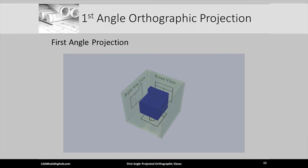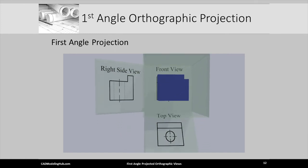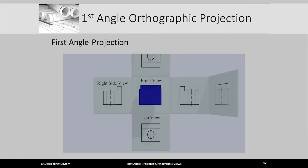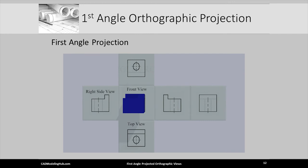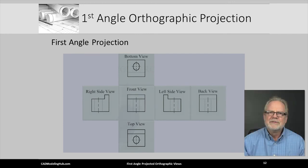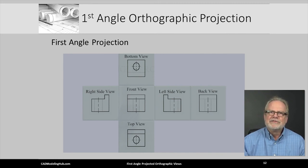It is fair to say that a doorstop this simple would never need all six orthographic views placed on a drawing. However, complex real-world models may need all six ISO first angle projected views. In addition, they may need even more detailed section and auxiliary views.